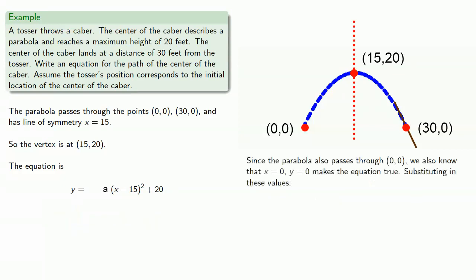Since the parabola also passes through (0, 0), we also know that x = 0, y = 0 makes the equation true. So substituting in these values, we get an equation where a is the only value we don't know. So solving for a gives us a = -20/225, and that's the equation of our parabola.